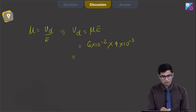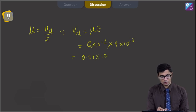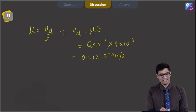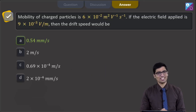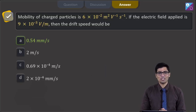Substituting the values, mu is 6 into 10 to the power minus 2 and E is 9 into 10 to the power minus 3. On solving, we get a value of 0.54 into 10 to the power minus 3 meters per second, which is 0.54 millimeters per second. Hence the correct answer is option number A.